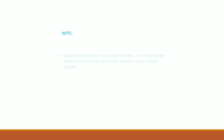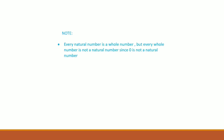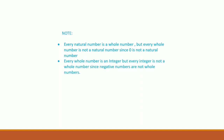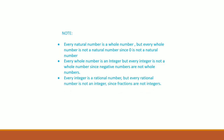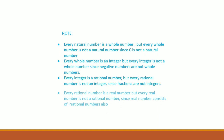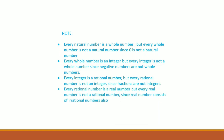Some important points to note: every natural number is a whole number, but every whole number is not a natural number, since 0 is not a natural number. Every whole number is an integer, but every integer is not a whole number, since negative numbers are not whole numbers. Every integer is a rational number, but every rational number is not an integer, since fractions are not integers. Every rational number is a real number, but every real number is not a rational number, since real numbers include irrational numbers as well.